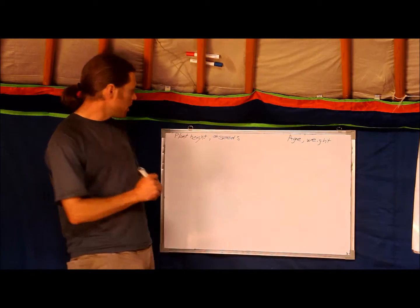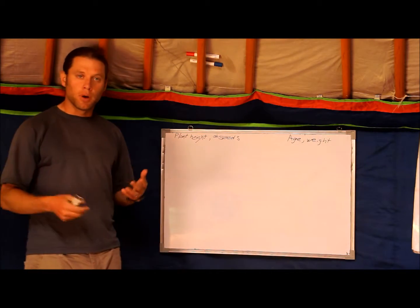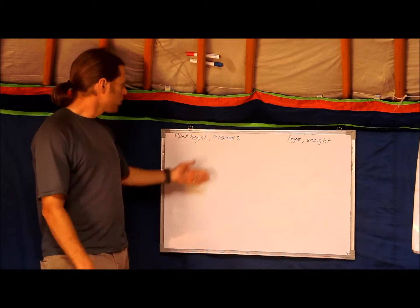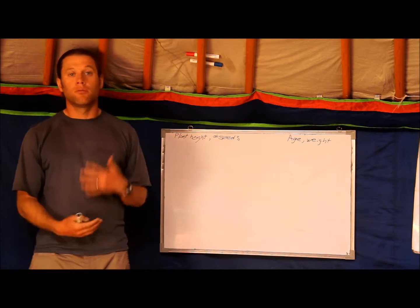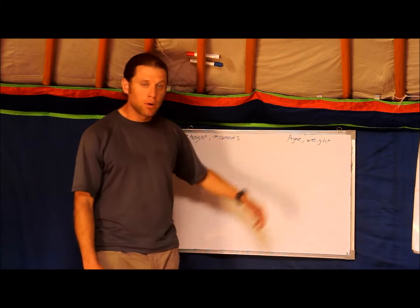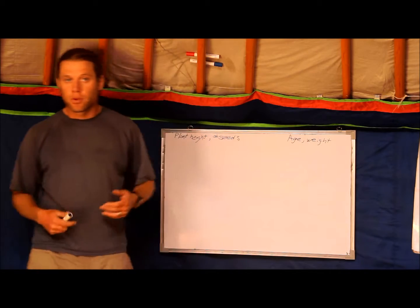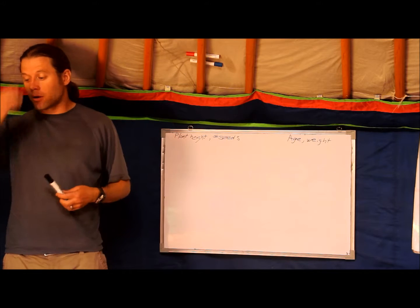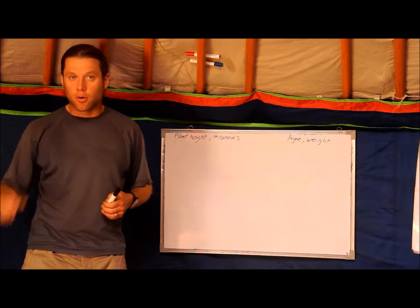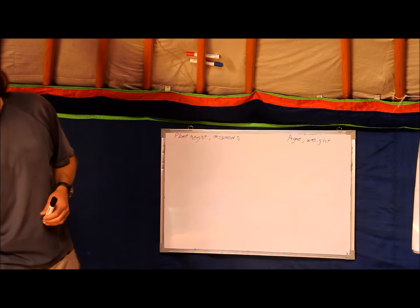We can measure the height of a plant — we have some number. We can measure number of seeds — that's a number. Age is a number. Weight is a number. These are not categories. If you have categorical variables, you have to use something different.